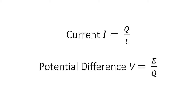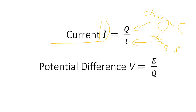Here are the two equations that involve charge. Current, written as I, is the rate of flow of charge — charge in coulombs divided by time in seconds. Potential difference, the voltage, is the amount of energy you get for an amount of charge flowing, so V equals energy in joules divided by charge in coulombs.